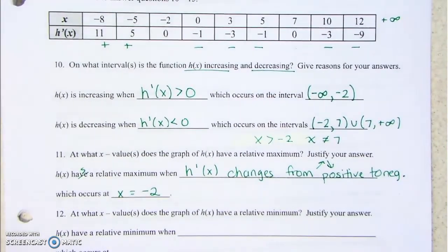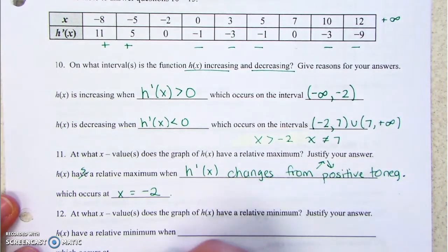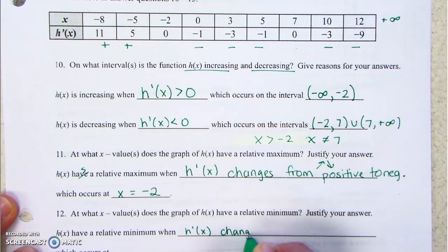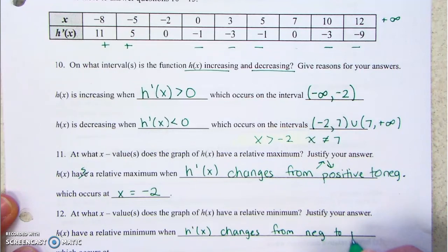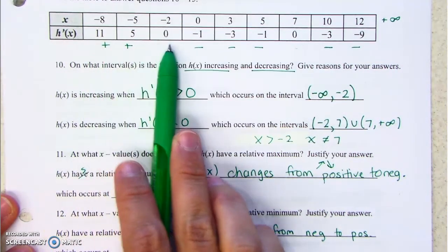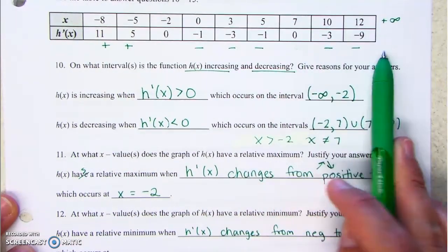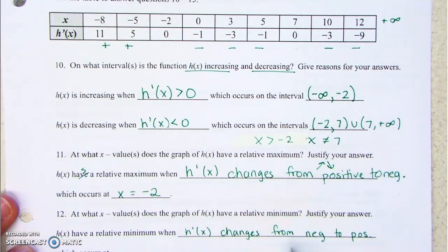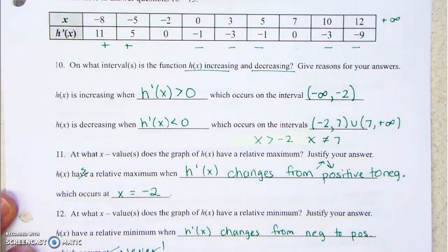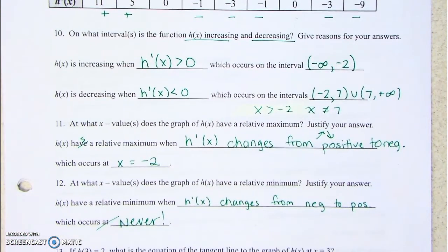At what values does h have a relative minimum? h has a relative minimum when h prime changes from negative to positive. Looking at the table: negative, negative, negative, zero, negative, negative. Does it ever go from negative to positive? Never.